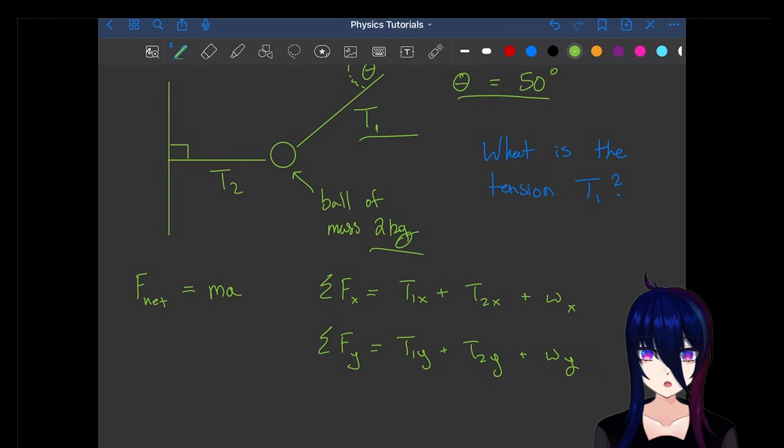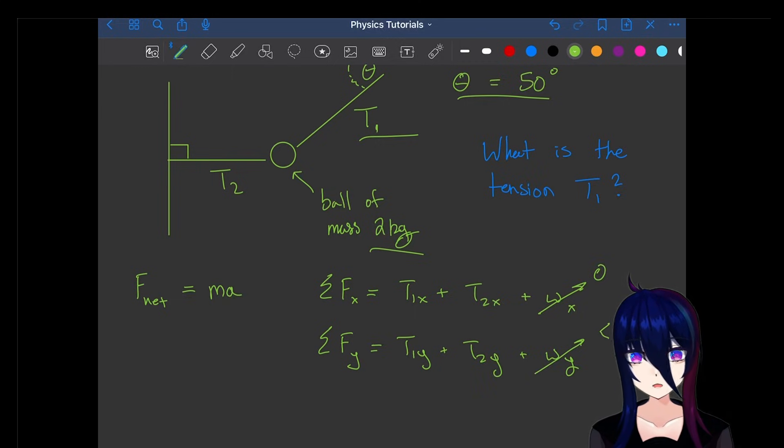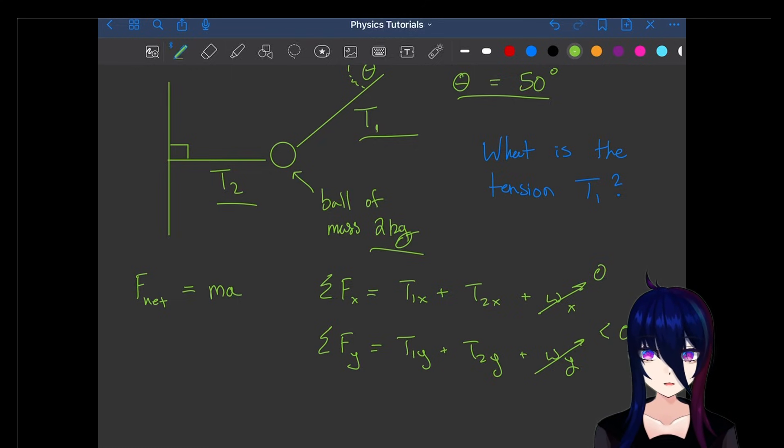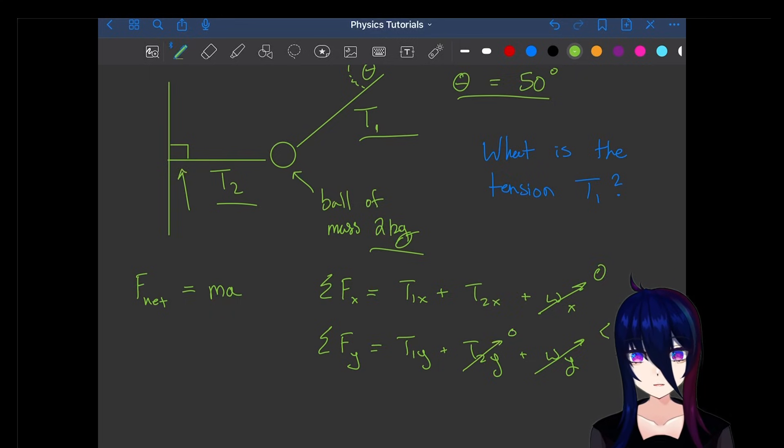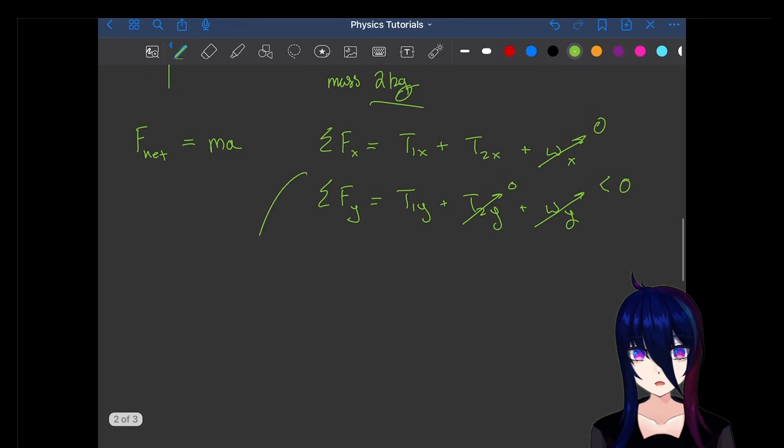Let's first look at the X component stuff. Well, we know that the weight of the X component is going to be zero, and we know because it's pulling down, the weight of the Y component is going to be less than zero, be negative. So because T2 is horizontally suspended, as we can see by that right angle, the Y component of T2 is gonna be zero.